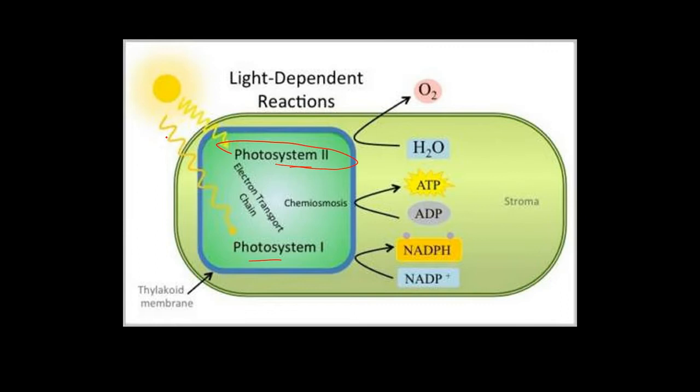Sunlight excites special pigments called chlorophyll, releasing energized electrons from Photosystem 2 that are shuttled to Photosystem 1 to provide energy to make ATP.